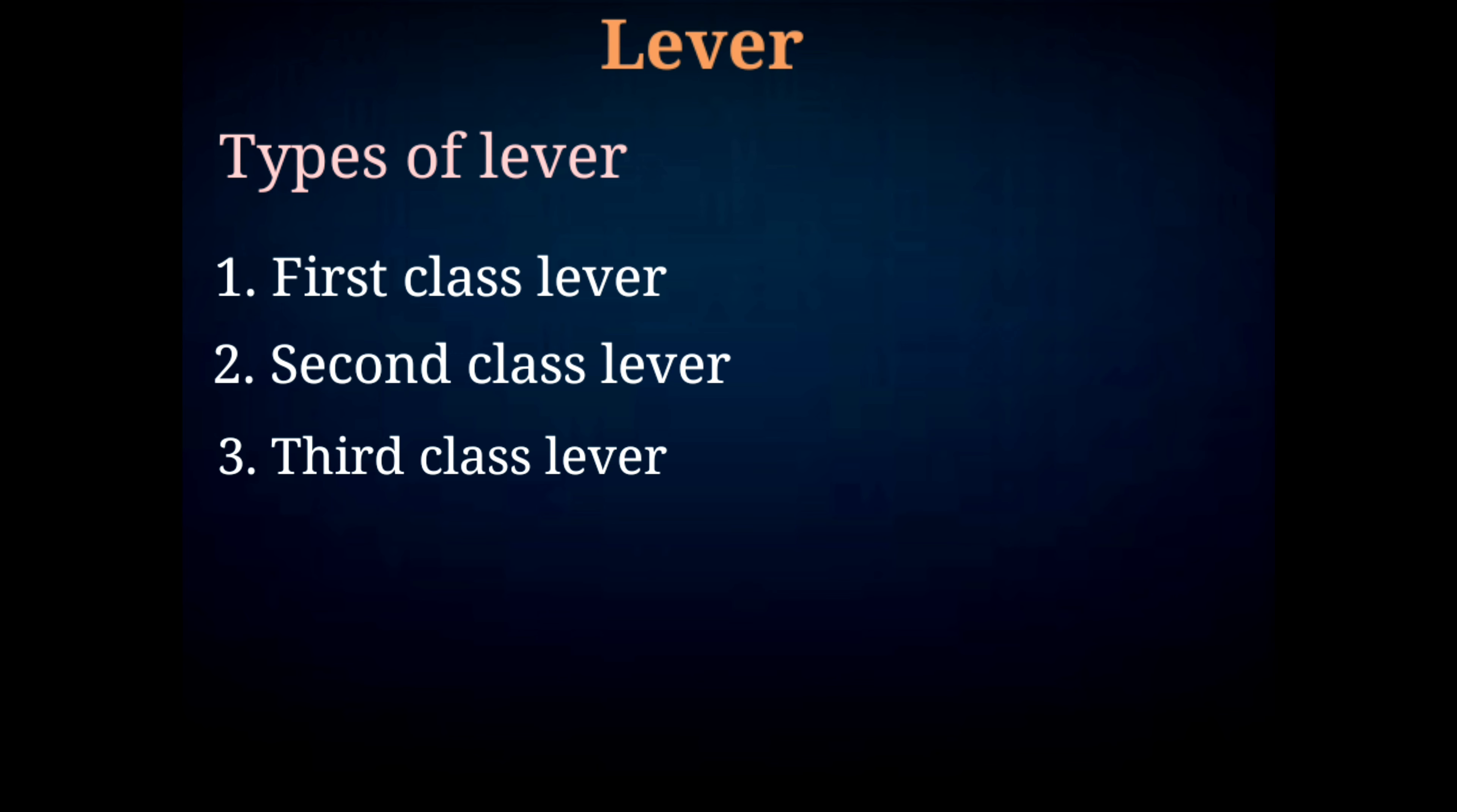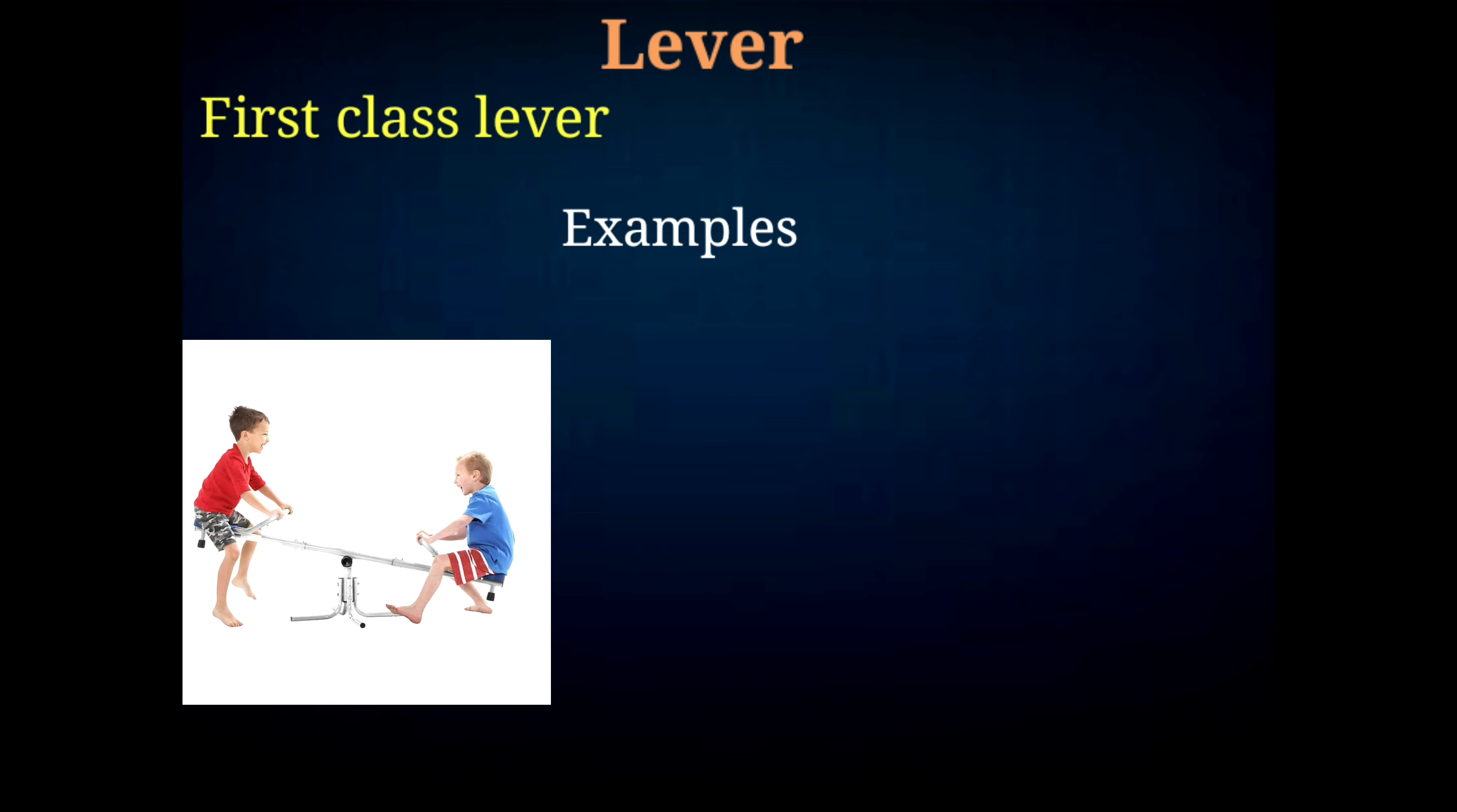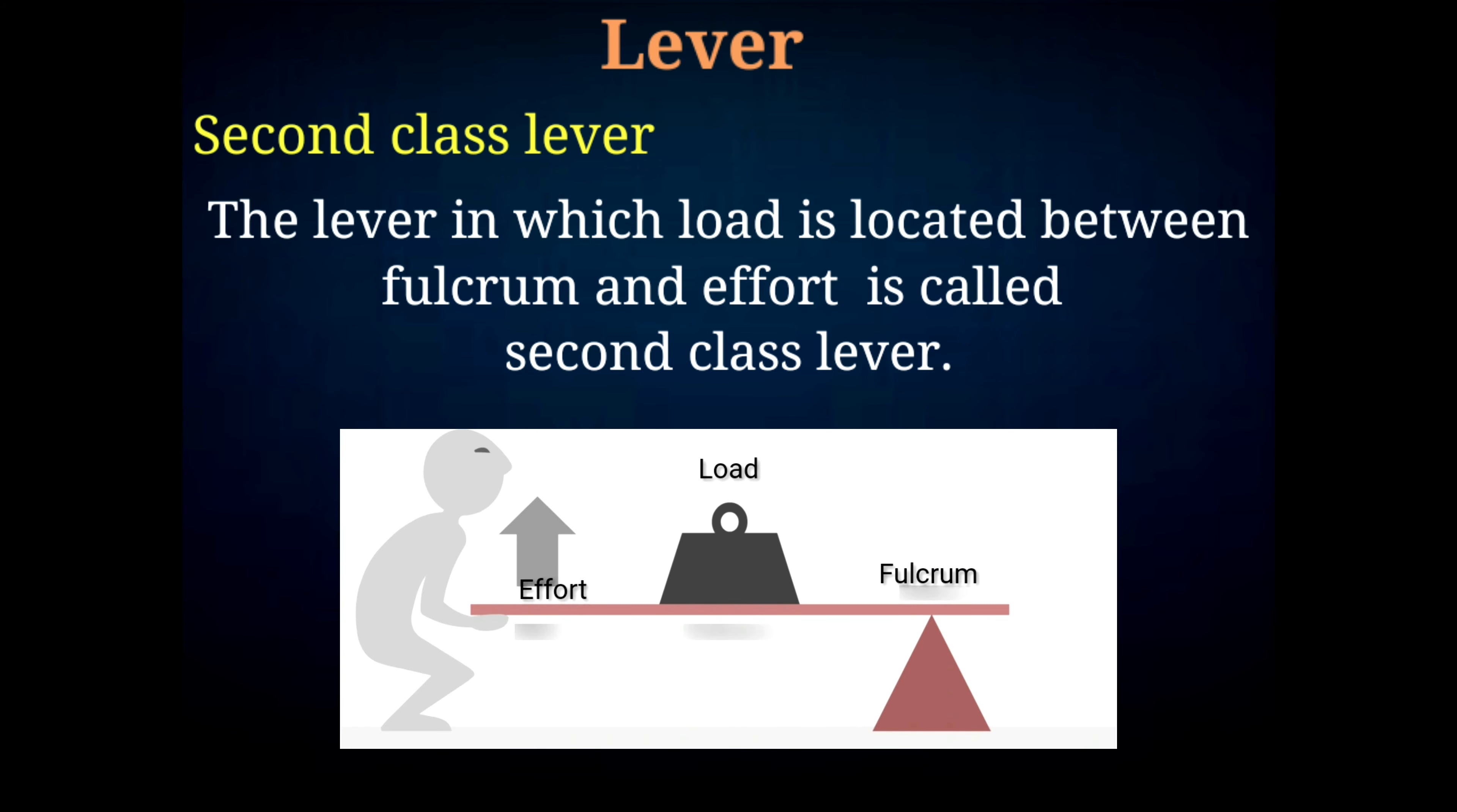Now let's discuss about the types of levers in detail. First class lever: The lever in which fulcrum is present between load and effort is called first class lever. Some examples of first class levers are seesaw, beam balance, scissors, etc.